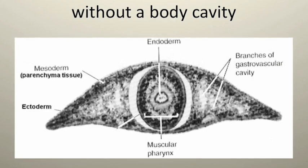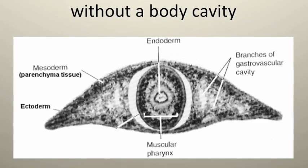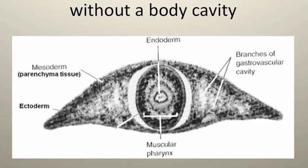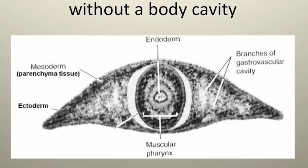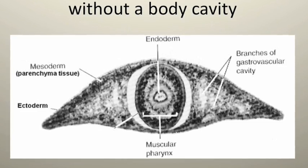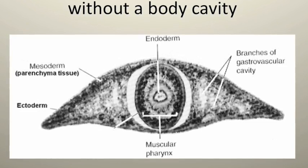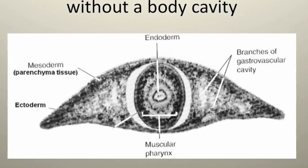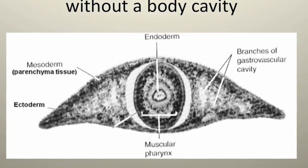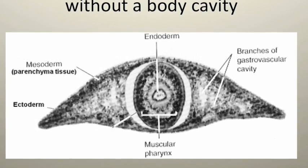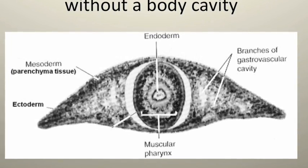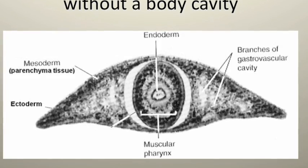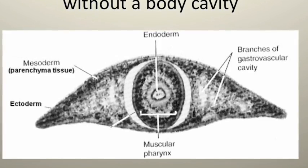Because these organisms are triploblastic, they are derived from three embryonic tissue layers: the ectoderm, the mesoderm, and the endoderm. The ectoderm is the tissue layer from which skin, cilia (which are hair-like structures), nerves, and sense organs develop.